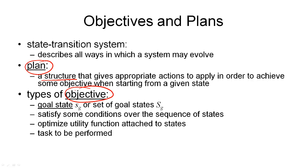There are different types of objectives that can be defined for planning. The simplest way is to have a goal state — either an individual goal state or a set of goal states, as seen in the missionaries and cannibals problem. An objective can also include constraints on intermediate states, for example states we need to avoid. A more complex objective could come with a utility function that tells us to maximize utility on our way to the goal. A completely different view would be to not try to achieve something but to perform a given task — for example, going on a holiday where you want to end up back in the same state you started, but perform something in between.